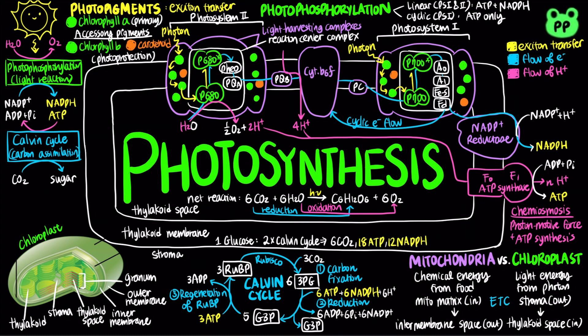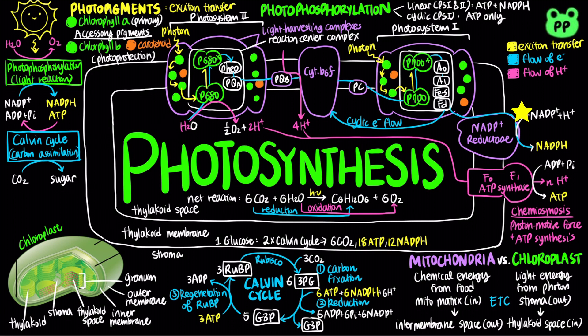In summary, photosynthesis involves two stages. Photophosphorylation, or light reactions, converts light energy to NADPH and ATP through a series of electron transfers, with water as the initial electron donor and NADP+ as the final electron acceptor, releasing oxygen as a byproduct. The free energy released in this process is used to pump protons into the thylakoid space, which diffuse back into the stroma to generate ATP.